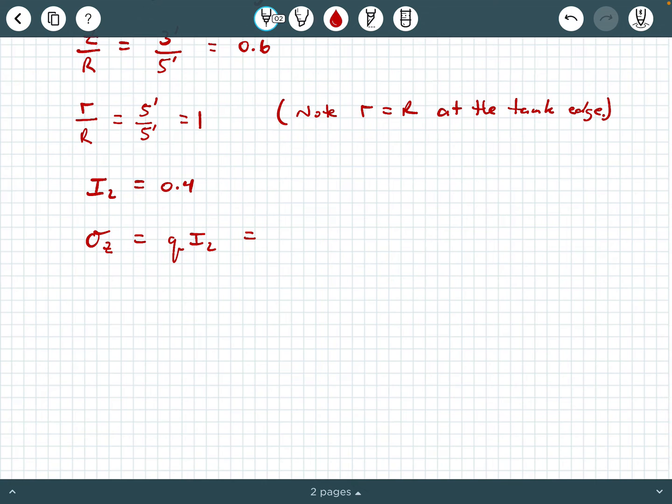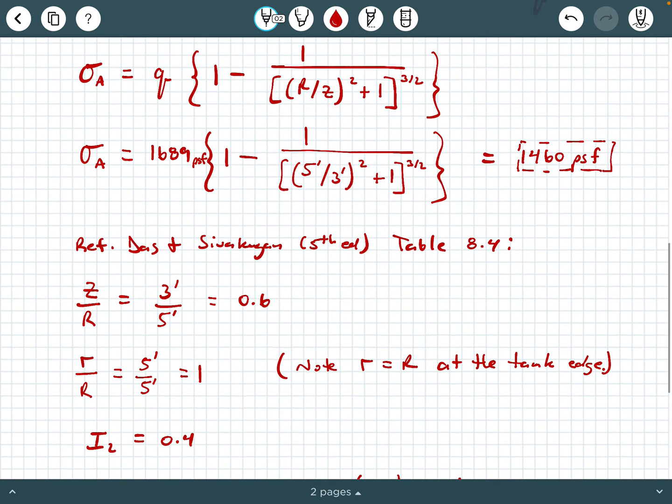q is 1689 PSF times 0.4. Let's see what we get, 1689 times 0.4, I get 676 PSF. And this is actually at point B, so I'll relabel this, instead of calling it σ_z, I'm calling it σ_B.